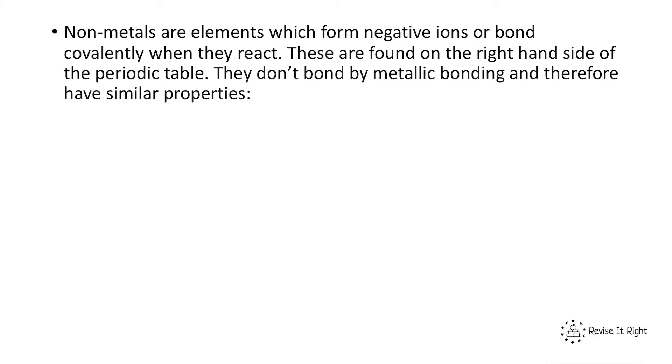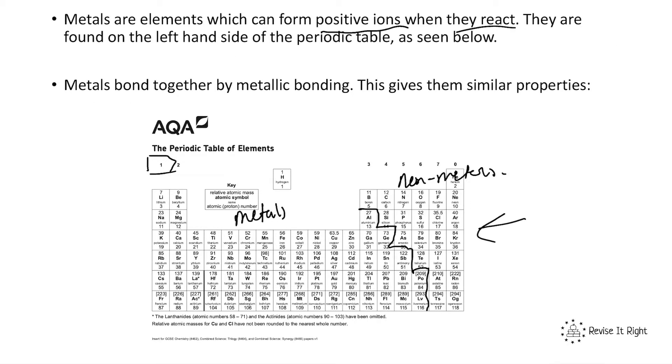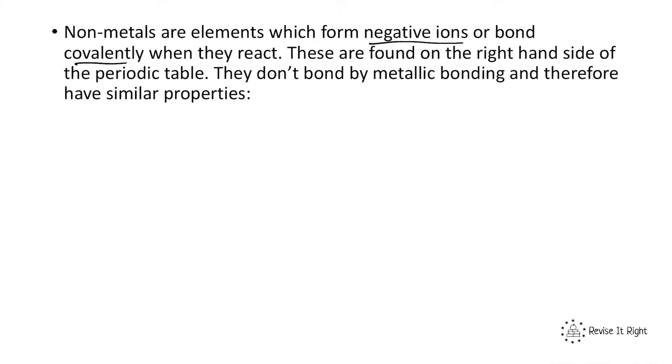Non-metals, on the other hand, are elements which form negative ions or bond covalently. They are found on the right-hand side. They don't bond by metallic bonding and therefore have similar properties to each other.